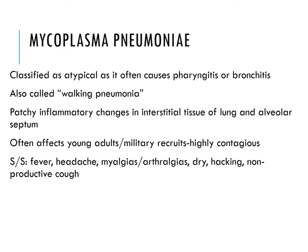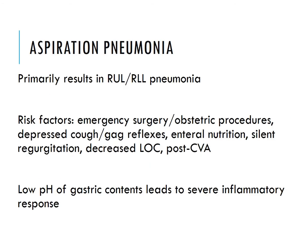Mycoplasma pneumonia is classified as atypical and often causes pharyngitis or bronchitis. It's also called walking pneumonia. It causes patchy inflammatory changes in the interstitial tissue of the lung and alveolar septum. It's often seen in young adults and military recruits and is highly contagious due to close-quarters living. Signs and symptoms include fever, headache, myalgia, arthralgia, and a dry, hacking, non-productive cough.